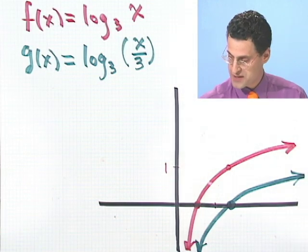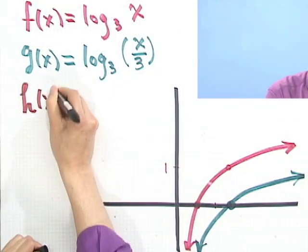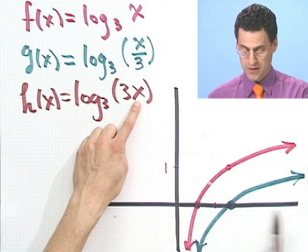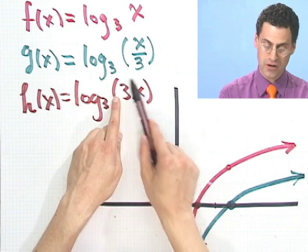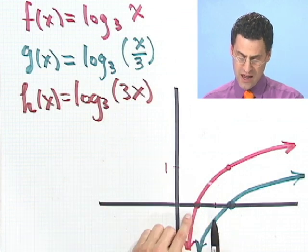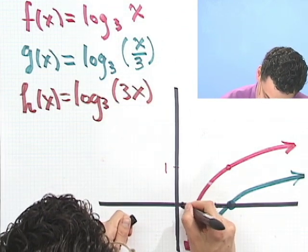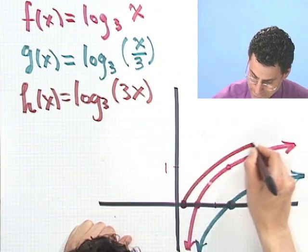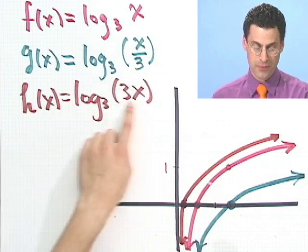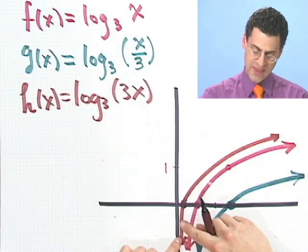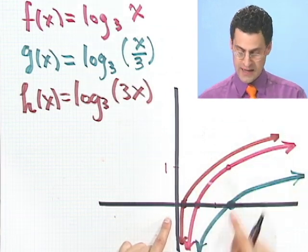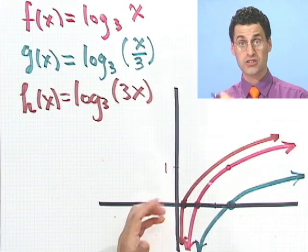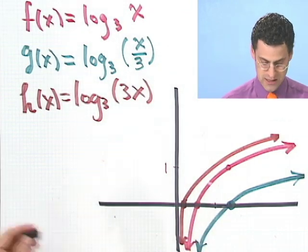What happens if we do the reverse kind of process? What if I multiply by a big number like h(x), which would equal log base 3 of 3x? What's the effect there? Well, first let's find the x-intercept. Where does this thing cross the x-axis? Well, wherever this number is 1. So what value of x makes that 1? Well, a third. So now instead of being at 1, I've got to shift over to a third. And what happens here now is that this is going to be a movement in this direction. So the brown function is going to come a little bit this way. When the red wants to kiss the y-axis, we've got the brown as a chaperone.